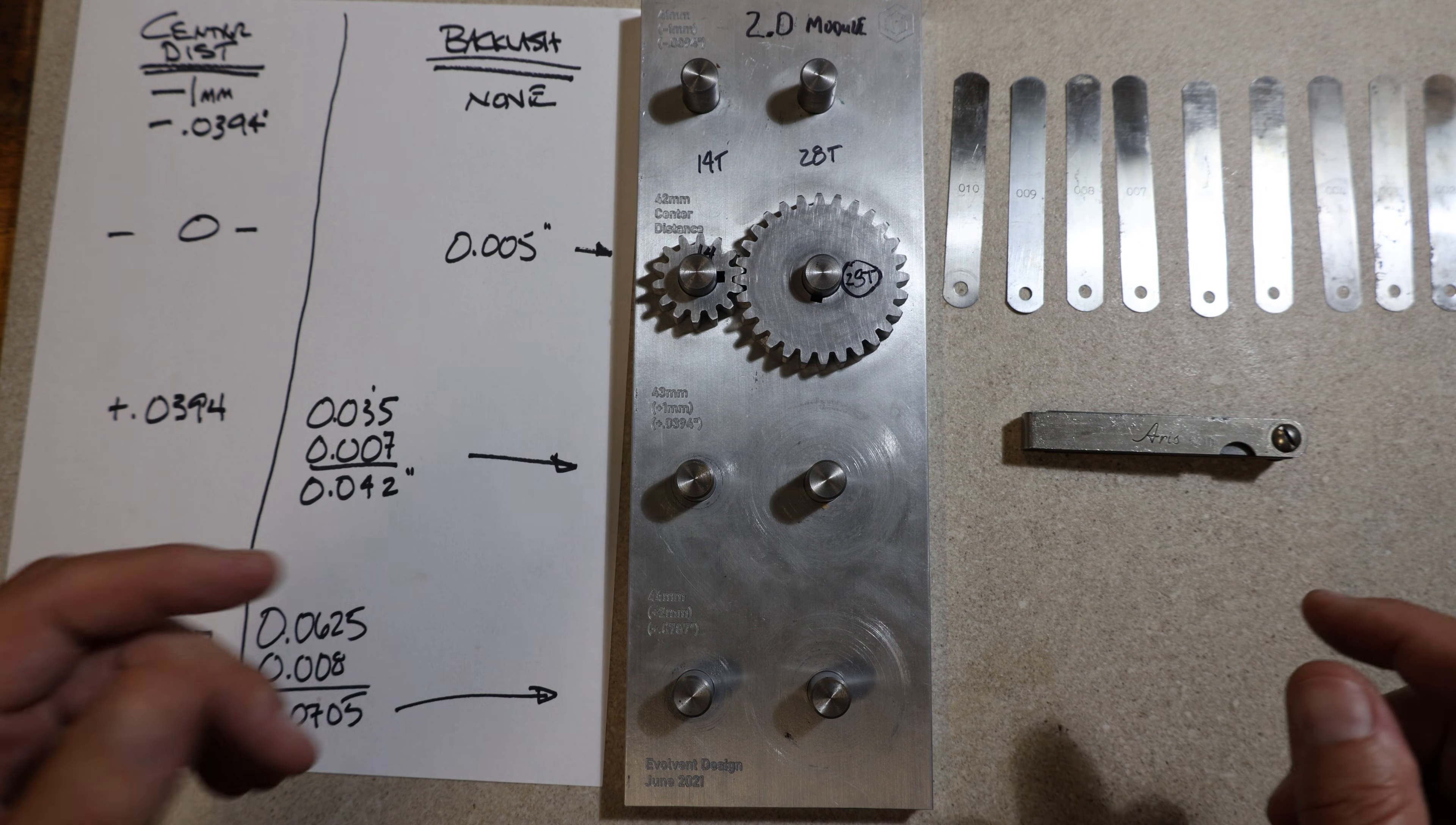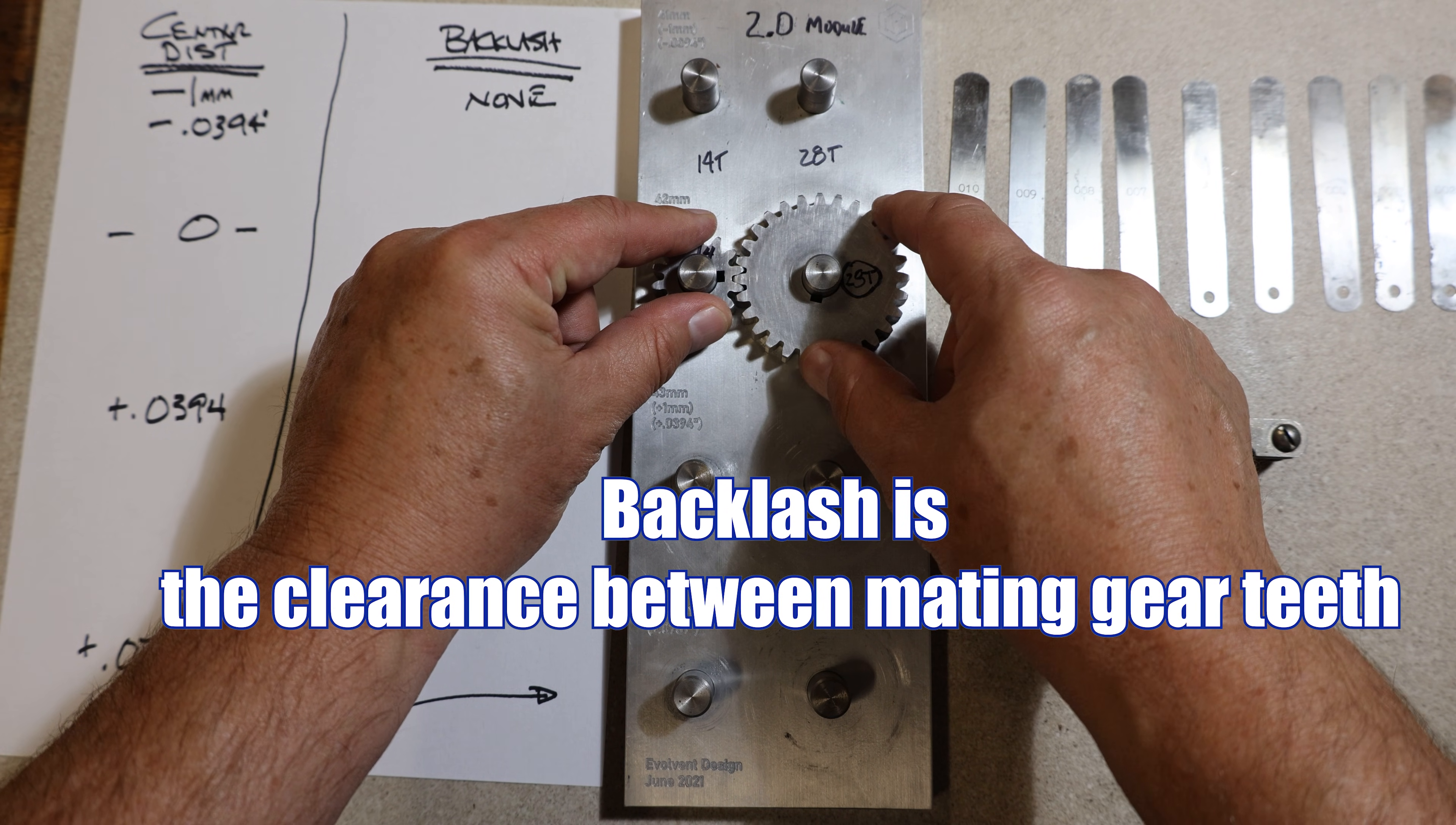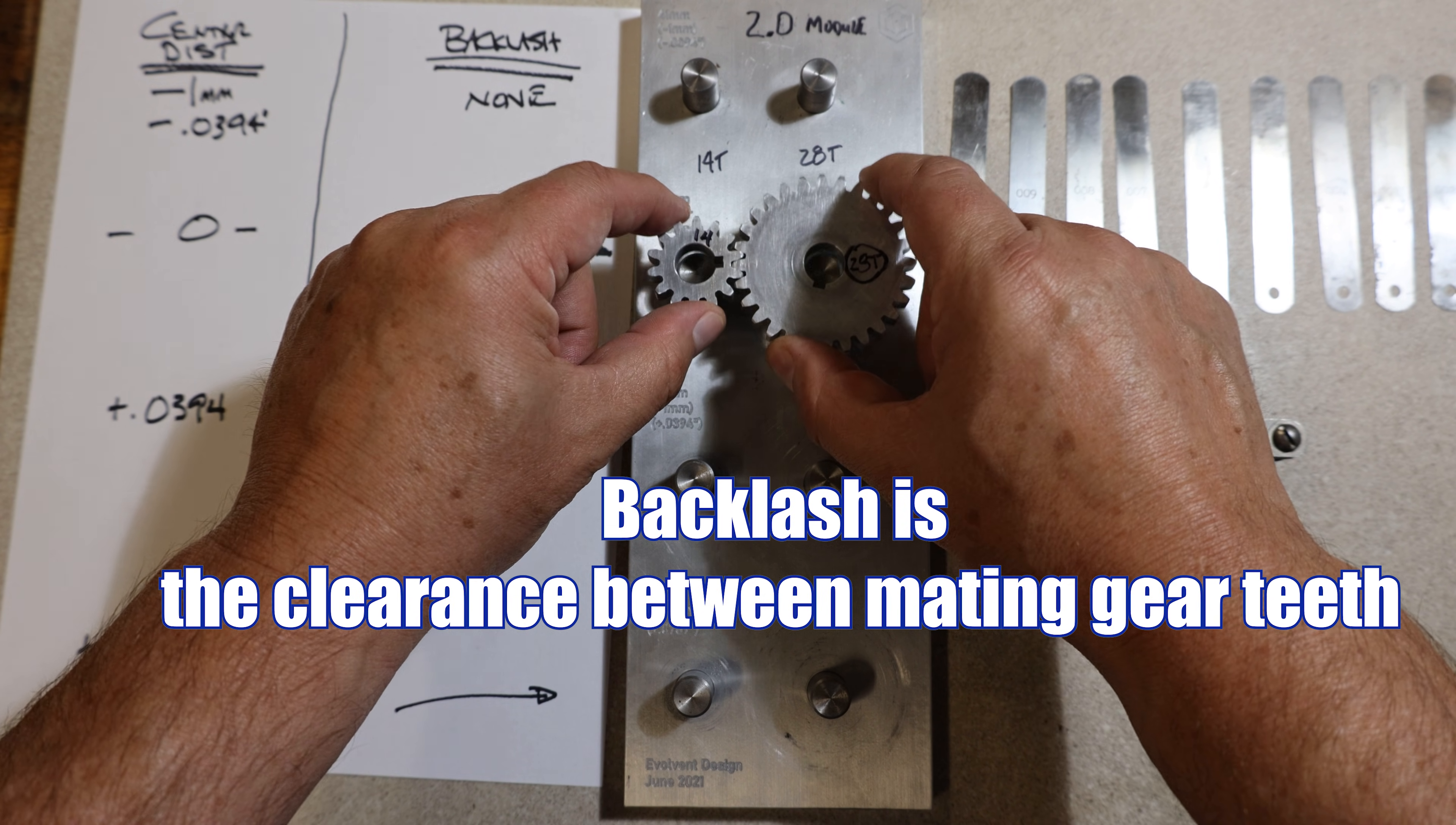The way you measure backlash, one gear doesn't have backlash, two gears have backlash. And it's measured by immobilizing one and seeing how much movement there is in the other. Do you hear this? A little bit of backlash.